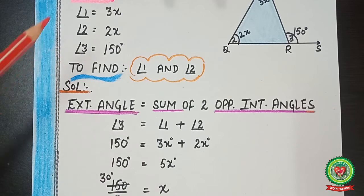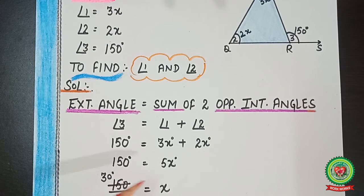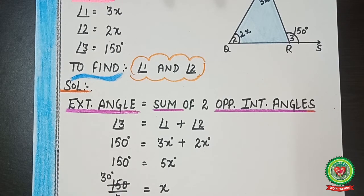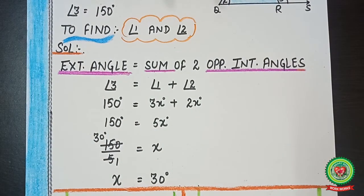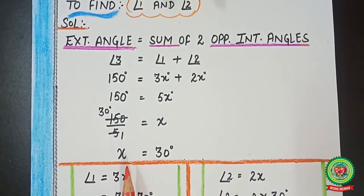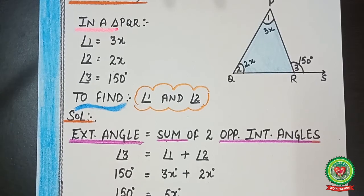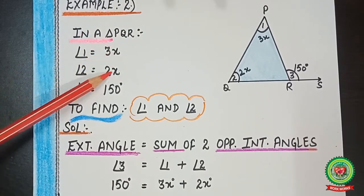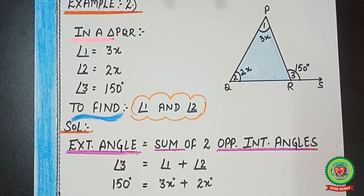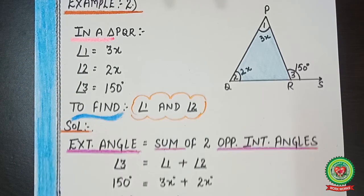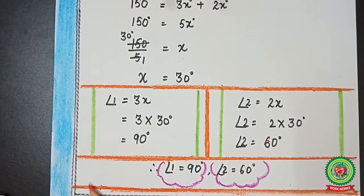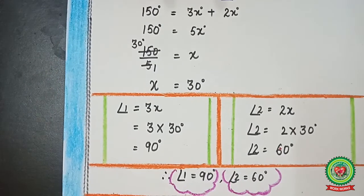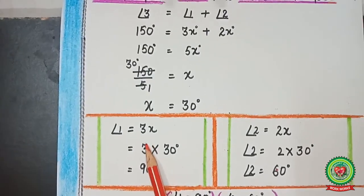Substituting the values: 150 = 3x + 2x = 5x. To find x, we divide: 150 ÷ 5 = 30, so x = 30°. Now we need to substitute this value into the angle expressions. We found the value of x but not the individual angles, so we take two separate calculations for angle 1 and angle 2.